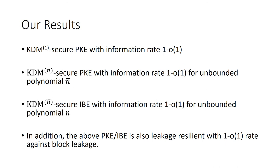The main results of this paper consist of: KDM-1-circle PKE with optimal information rate; KDM-n-bar-circle PKE with optimal information rate for unbounded polynomial n-bar; and KDM-n-bar-circle IBE with optimal information rate for unbounded polynomial n-bar. In addition, the above PKE or IBE is also leakage-resilient with optimal leakage rate against block leakage functions. I focus on the first result, and the others can be viewed as its extensions.